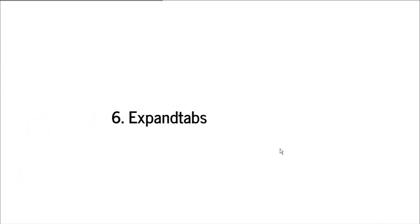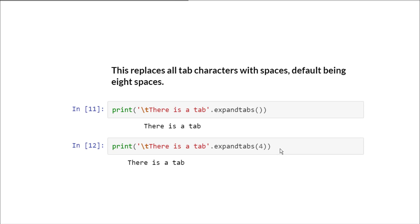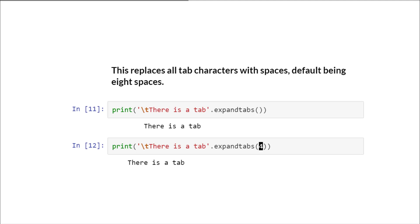Then we have the expandtabs method. This replaces all tab characters with spaces — the default being 8 spaces. For example, in this string we have a backslash-t and a string. If you apply expandtabs, it expands that tab in the output — by default it is 8 spaces. Here we have applied an argument of 4, which means the backslash-t will be converted to 4 spaces: 1, 2, 3, and 4.